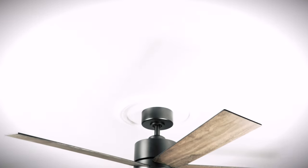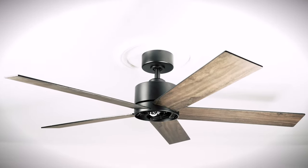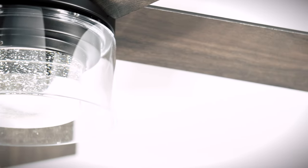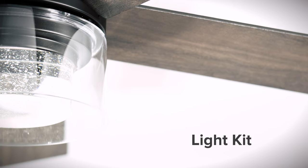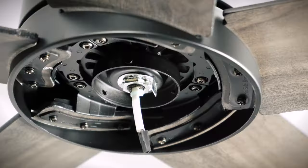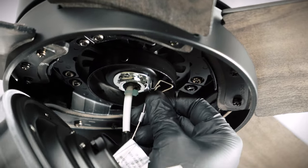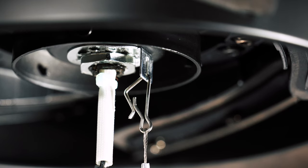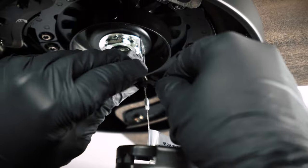With the fan blades attached, you can now install the light kit. Bring the LED light kit up to the fan. Attach the security cable to the tab underneath the motor. Connect the two pin wire connectors.